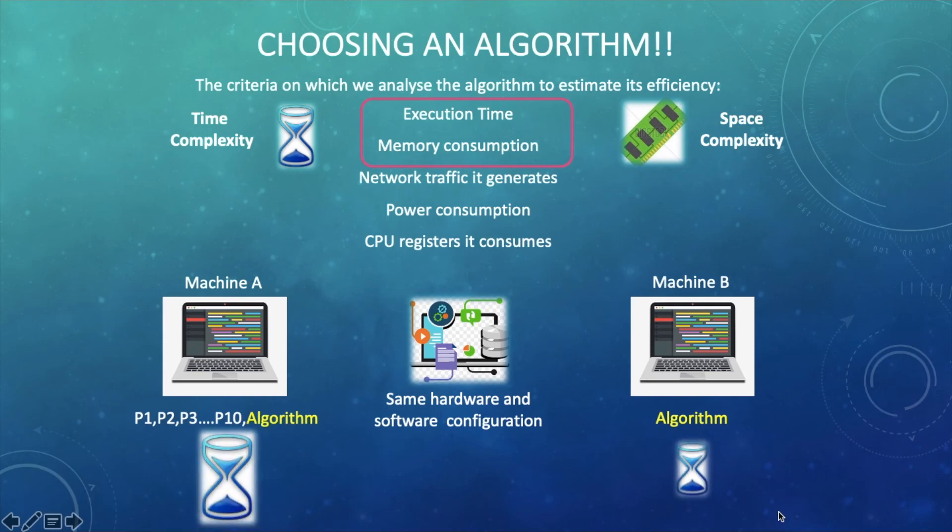Therefore machine B will run same algorithm in less time as compared to machine A. This example has shown that exactly same algorithm or code is running differently on different machines. That is why the algorithm analysis can provide the estimate of efficiency but not the exact number like how much time and space it will occupy.